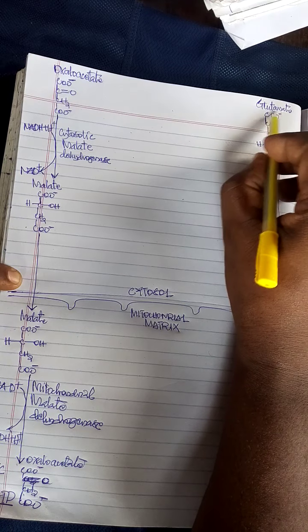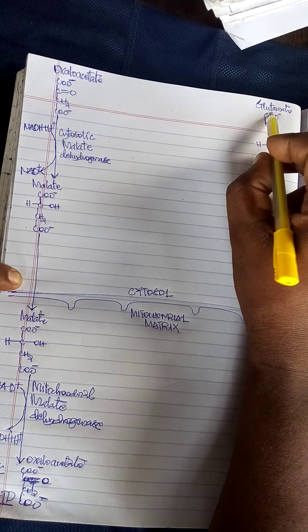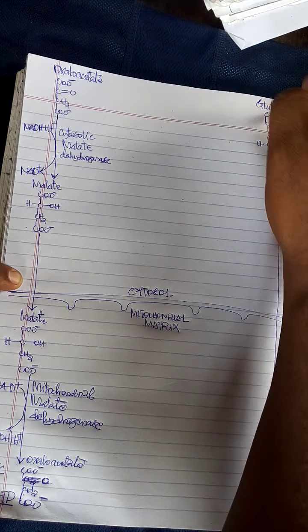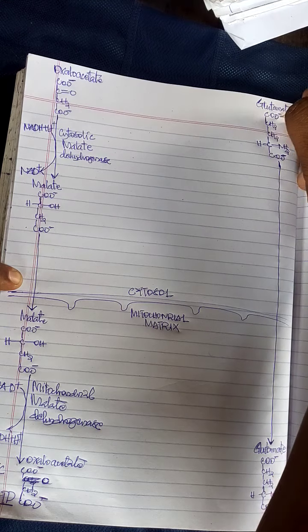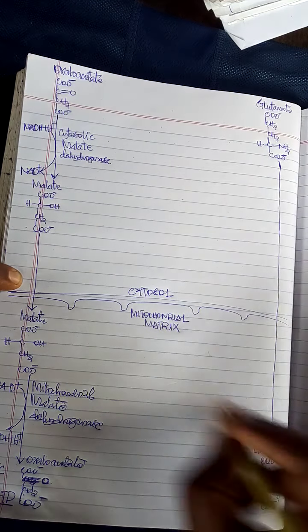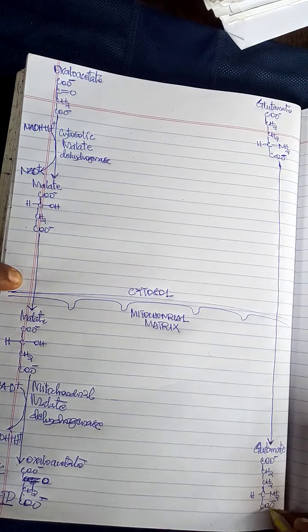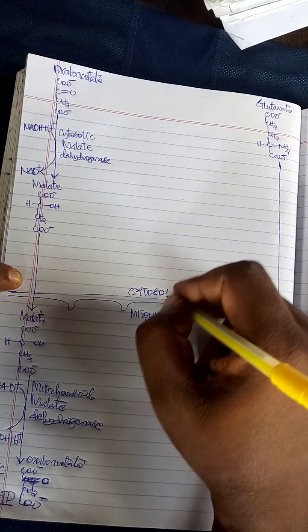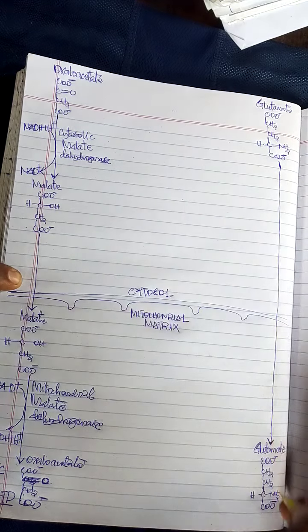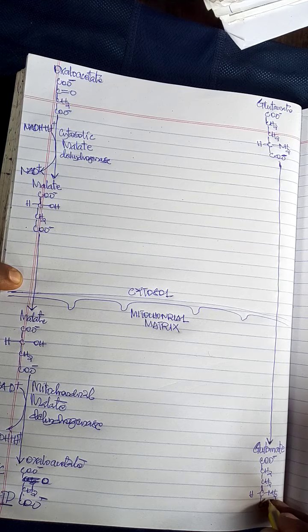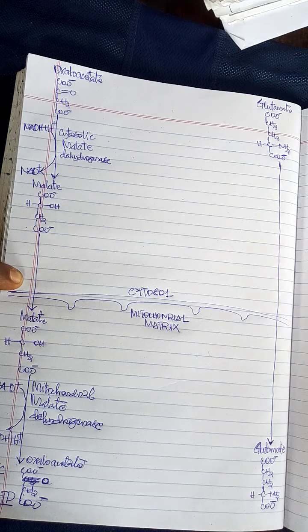glutamate, which is an amino acid, is also introduced inside the mitochondrial matrix from the cytoplasm or cytosol of the cell.